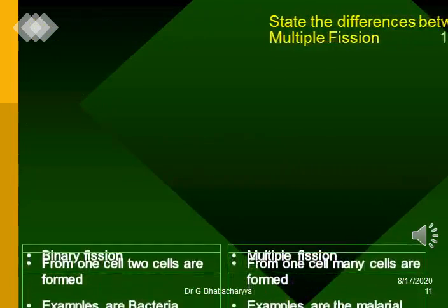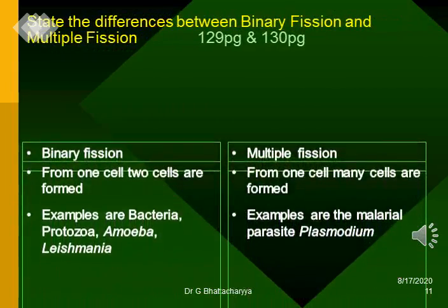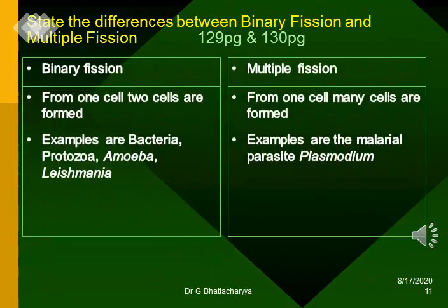State the differences between binary fission and multiple fission. In binary fission, from one cell two cells are formed. In multiple fission, from one cell many cells are formed. Examples of binary fission: bacteria, protozoa, amoeba, Leishmania. Examples of multiple fission: the malarial parasite Plasmodium.